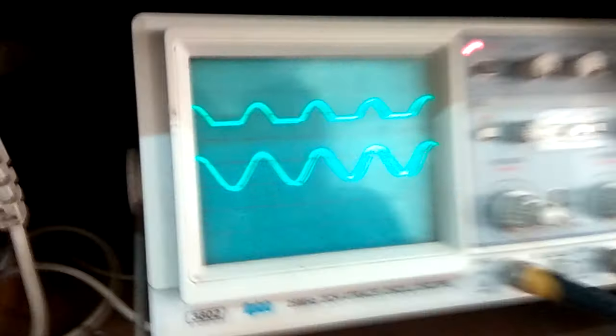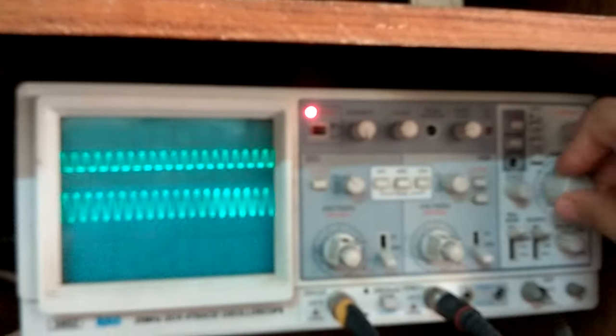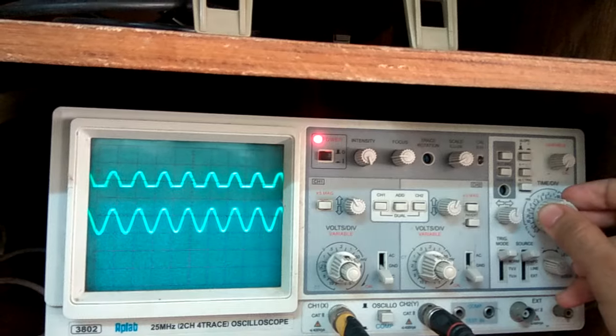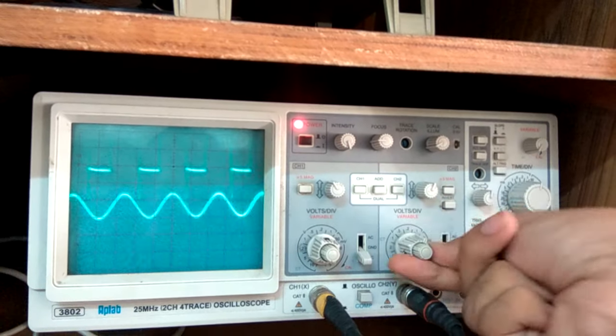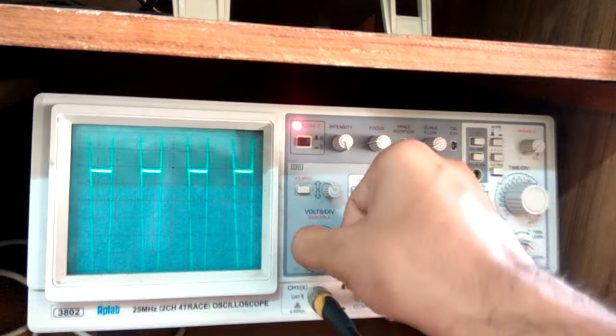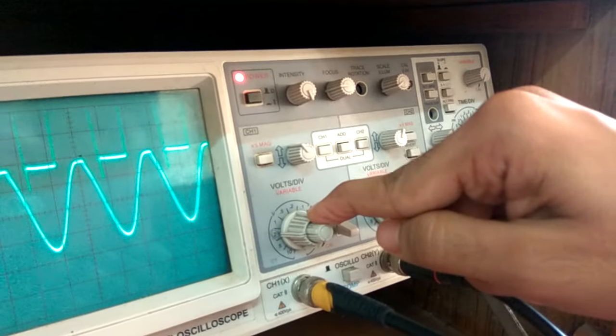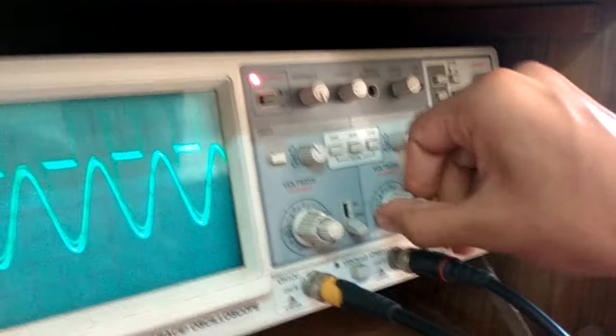This is the output that we get. To get this output first you might have this kind of wave or something like that. You have to adjust this time per division scale and even the volts per division. At the start it would be something like this. You have to slowly adjust this volts per division knob, lower it, lower this knob too.